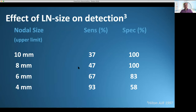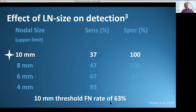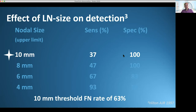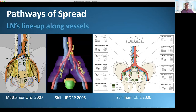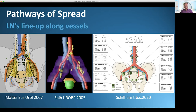Regarding size: if we use the size criteria of 10 millimeters minimal axial size as a cutoff for being metastatic, this threshold results in a false negative rate of 63% — quite significant. Specificity is good, but sensitivity is really very bad. Lymph nodes are located along the vessels, as shown in surgical, radiotherapy, and radiological publications. Lymph nodes follow vessels, and that is quite useful.